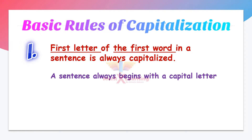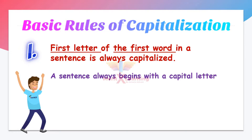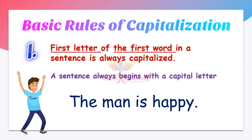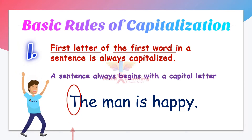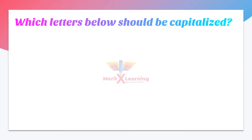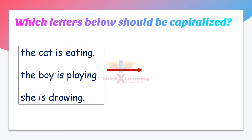A sentence always begins with a capital letter. Let's have a look at this example: 'The man is happy.' In this sentence, the first letter of the first word should be capitalized, so that is 'T'. It should always be capitalized. Now, which letters below should be capitalized? There are three sentences given.